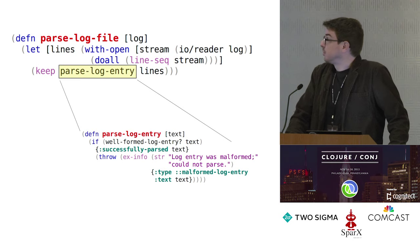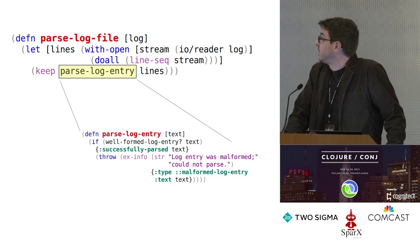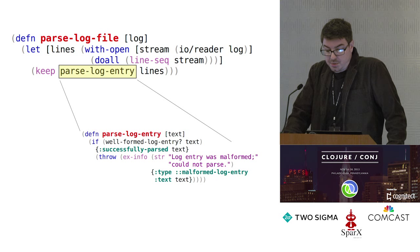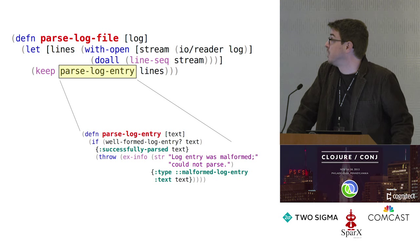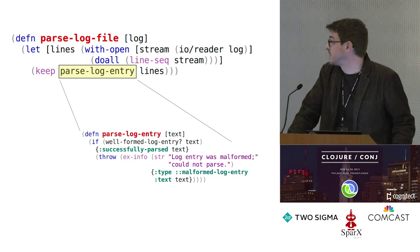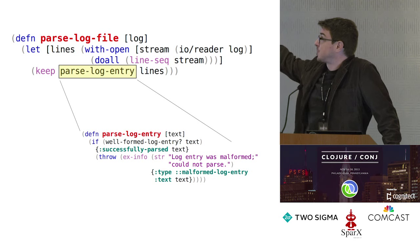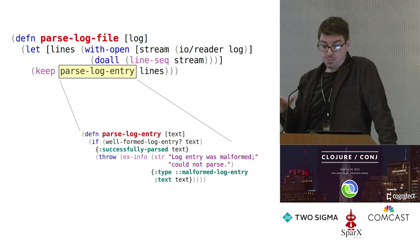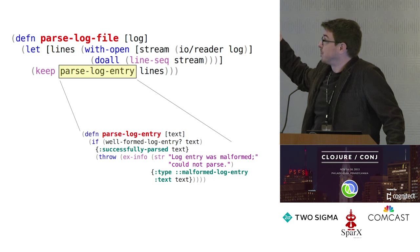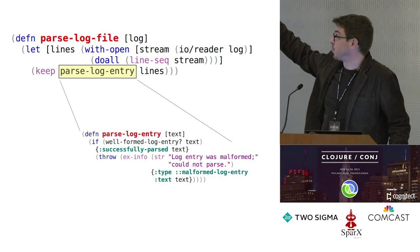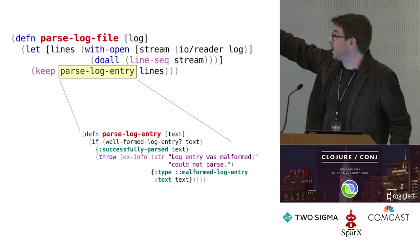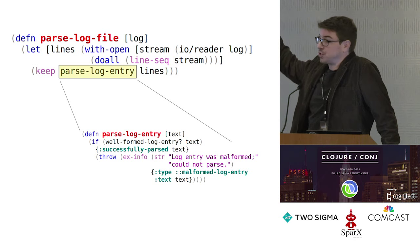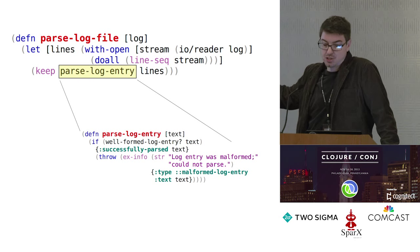This is called from inside parseLogFile, whose purpose is to open the file and split it into lines for processing. This provides an enclosing dynamic scope for parseLogEntry. I want to distinguish dynamic scope from lexical scope: the lexical or syntactic scope is just what's physically written there. For example, the let form defines 'lines' as a local variable only available to that keep call — you can't refer to 'lines' down inside the lower function. It's in the dynamic scope, but not the lexical.